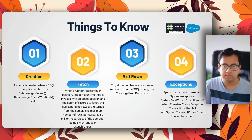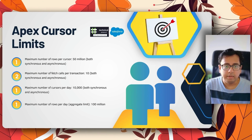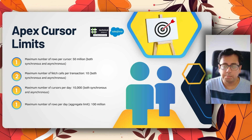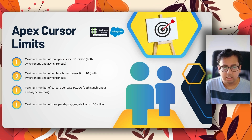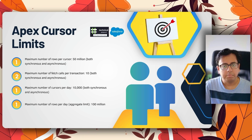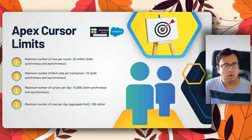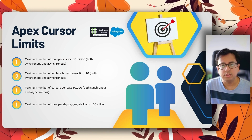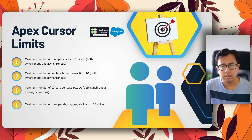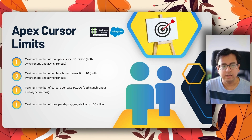Now let's understand the different cursor limits. Maximum number of rows per cursor is 50 million, irrespective of whether it's a synchronous or asynchronous operation. Maximum number of fetch calls per transaction is 10. Maximum number of cursors per day is 10,000. And maximum number of rows per day is 100 million. You don't need to memorize these — always refer to the Salesforce developer documentation, as limits are updated with each release.